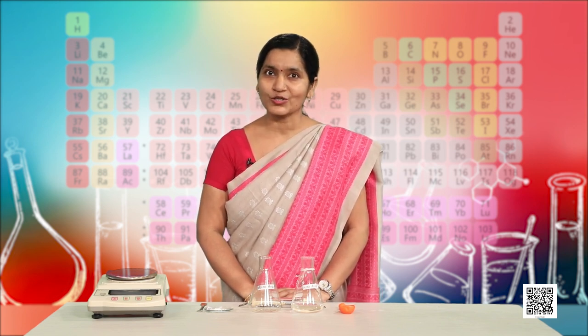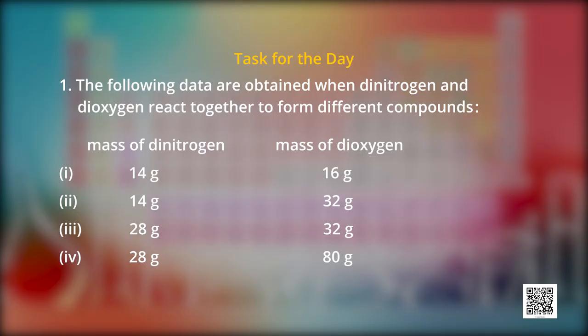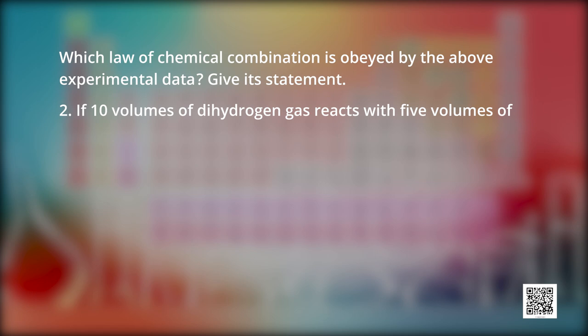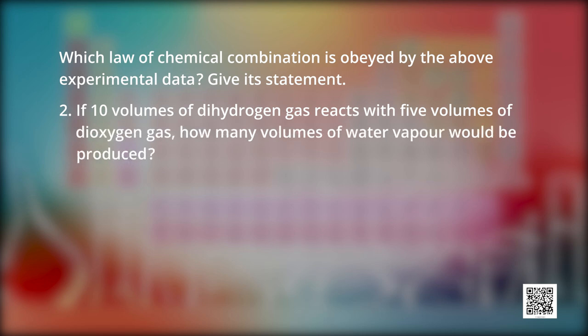Let us assess ourselves. The first question: the following data are obtained when dinitrogen and dioxygen react to form different compounds. Case 1: 14 g dinitrogen, 16 g dioxygen. Case 2: 14 g dinitrogen, 32 g dioxygen. Case 3: 28 g dinitrogen, 32 g dioxygen. Case 4: 28 g dinitrogen. Verify which law of chemical combinations is obeyed by the above experimental data and write its statement. Second question: if 10 volumes of dihydrogen gas reacts with 5 volumes of dioxygen gas, how many volumes of water vapor would be produced?